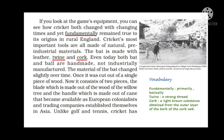The material of the bat changed slightly over time. Once it was cut out of a single piece of wood. Now it consists of two pieces: the blade, made out of wood from the willow tree, and the handle, made out of cane that became available as European colonists and trading companies established themselves in Asia.